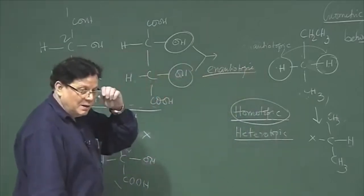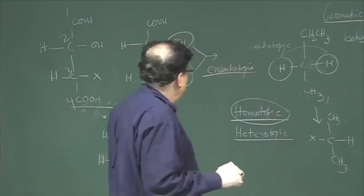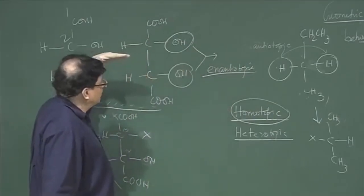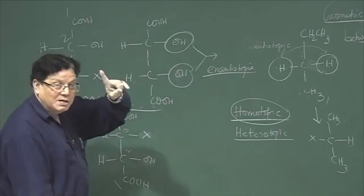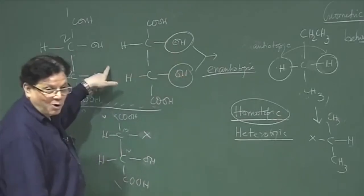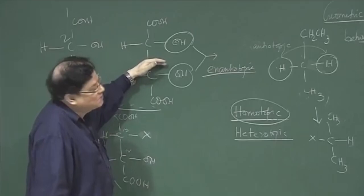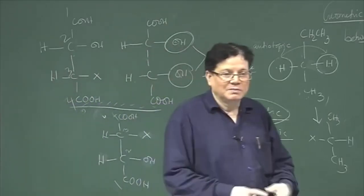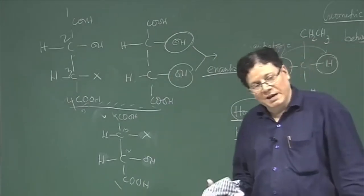In terms of symmetry elements: homotopic ligands are connected by C2. Heterotopic ligands that are enantiotopic are connected by improper elements of symmetry — either sigma (σ), inversion (i), or an improper rotation (Sn). In the modified molecule with OH groups on the same side, the C2 is gone and a plane of symmetry is present. So when improper elements of symmetry are present, the ligands become enantiotopic.